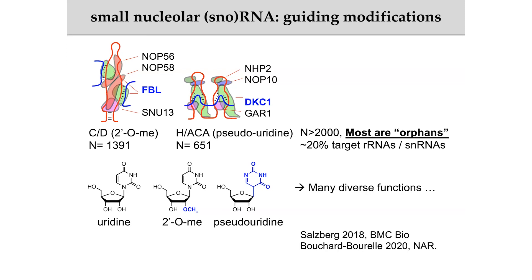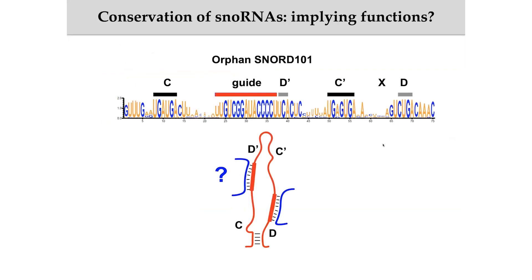Only about 20% of snoRNAs have been shown to target ribosomal RNAs and snRNAs. This is one example of an orphan snoRNA showing the conserved box motifs important for forming this structure and binding the enzymes. I want to draw your attention to the guide sequence, which is thought to bind to target RNAs — but again, we don't know their targets, so it is important for us to study this to understand their functions.